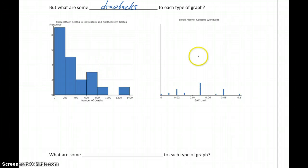We have an example of one of the histograms and one of the dot plots we considered. One drawback to histograms is that we lose precision. That is, we lose the information on the individual data values. So we know that one country had between 1,200 and 1,400 police officer deaths, but we don't know how many deaths there actually were.